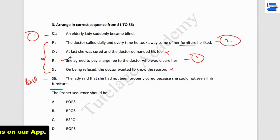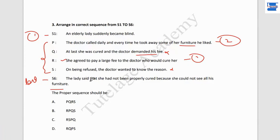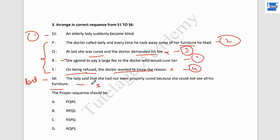Q and S remain: 'At last she was cured and the doctor demanded his fee,' and 'on being refused, the doctor wanted to know the reason.' The doctor would demand, then the old lady would refuse. She said she had not been properly cured because she could not see all his furniture — that's the joke. So the correct order is R, P, Q, S.